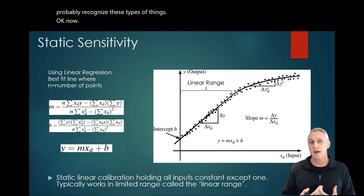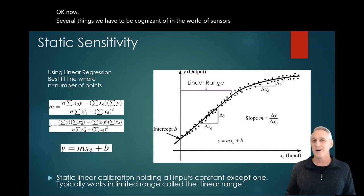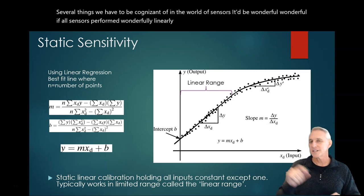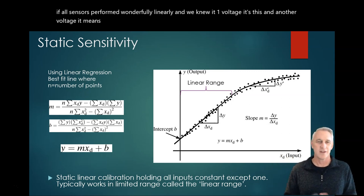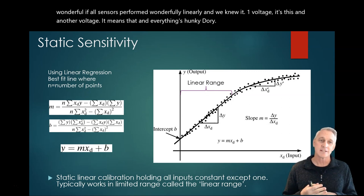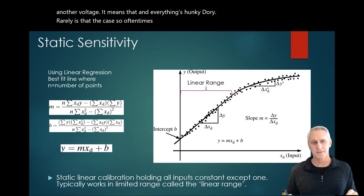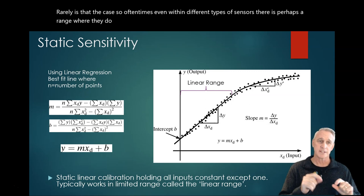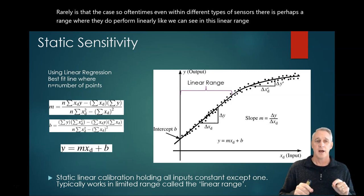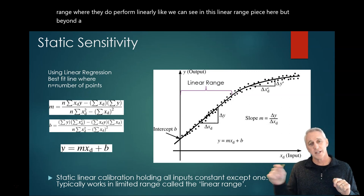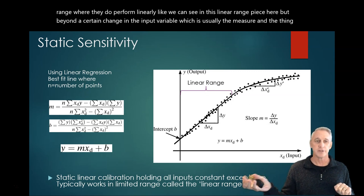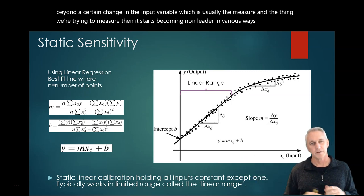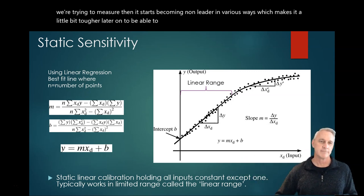Now, several things we have to be cognizant of in the world of sensors. It'd be wonderful if all sensors performed wonderfully linearly, and we knew it - one voltage it's this, another voltage it means that, and everything's hunky-dory. Rarely is that the case. Oftentimes, even within different types of sensors, there is perhaps a range where they do perform linearly, like we can see in this linear range piece here. But beyond a certain change in the input variable, which is usually the measuring, the thing we're trying to measure, then it starts becoming nonlinear in various ways, which makes it a little bit tougher later on to be able to map those things.